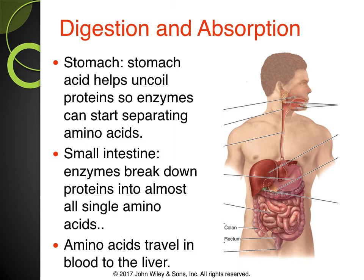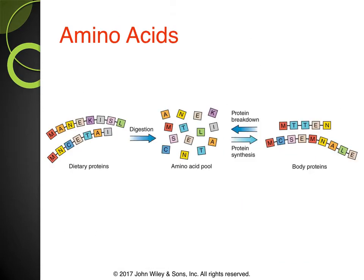Enzymes in the small intestine further break down the proteins into single amino acids. Amino acids can then travel in the blood to the liver. So when you eat a protein, your stomach starts to uncoil and break the amino acids down. Then your enzymes in your small intestine further break down those proteins, breaking them apart. This allows for reassembly — your body takes what it needs and rearranges to make the proteins it needs.